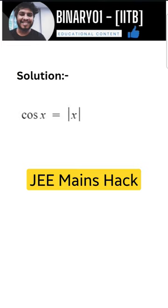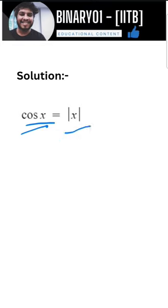So, here is cos x equals to |x|. The simple approach is that you can make a graph of cos x and |x| in the same plot. And then, the number of intersections will find out.